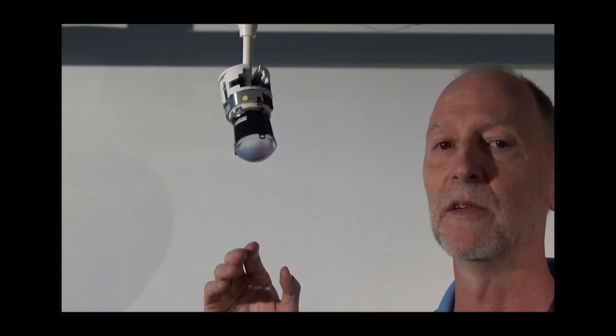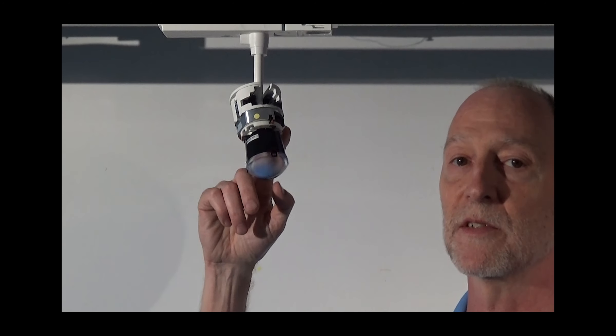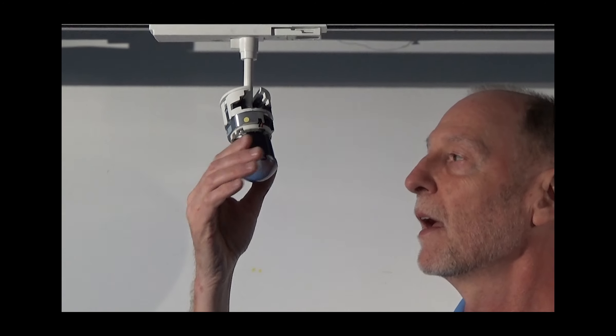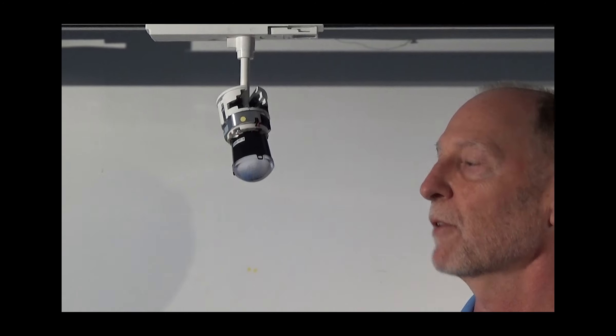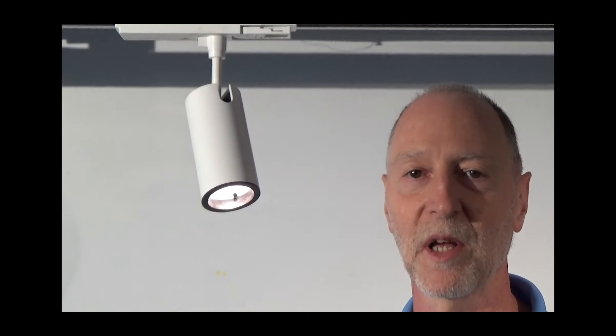So you can see how simple it is to upgrade a fixture, or change the CCT, or change the CRI, and simply put your reflector back on, put the housing back on, and you're good to go.